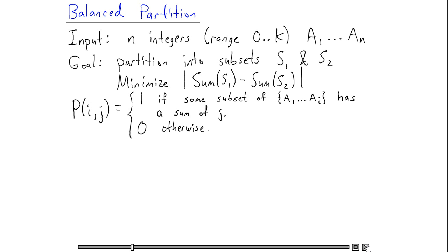How many such subproblems are there? Well, i can range from 1 up to n, and j can range from 0 up through n times k. So I have potentially n squared k different subproblems.